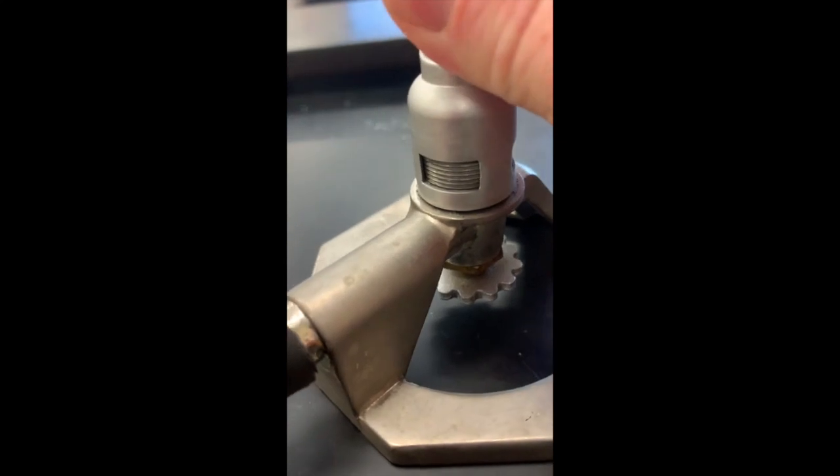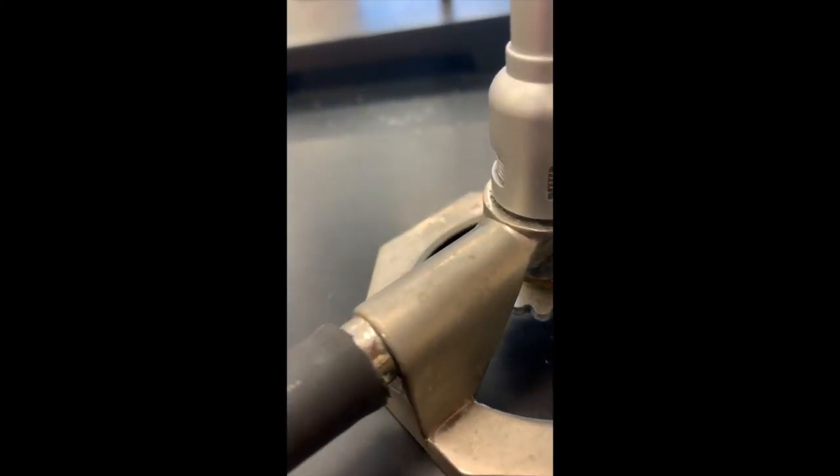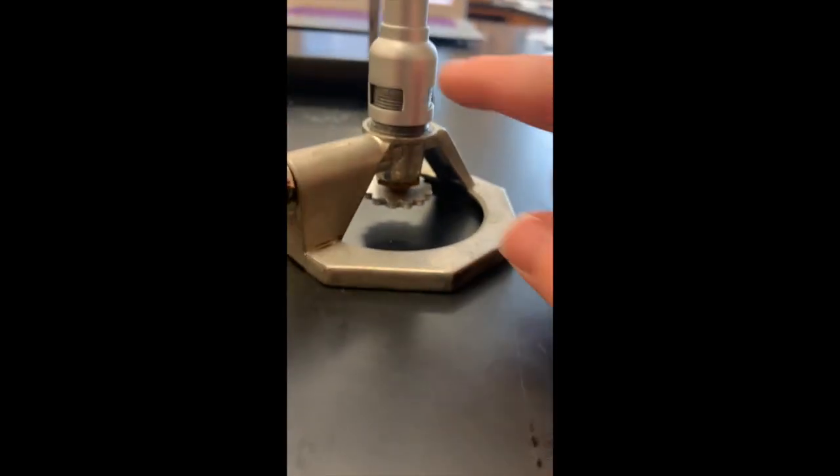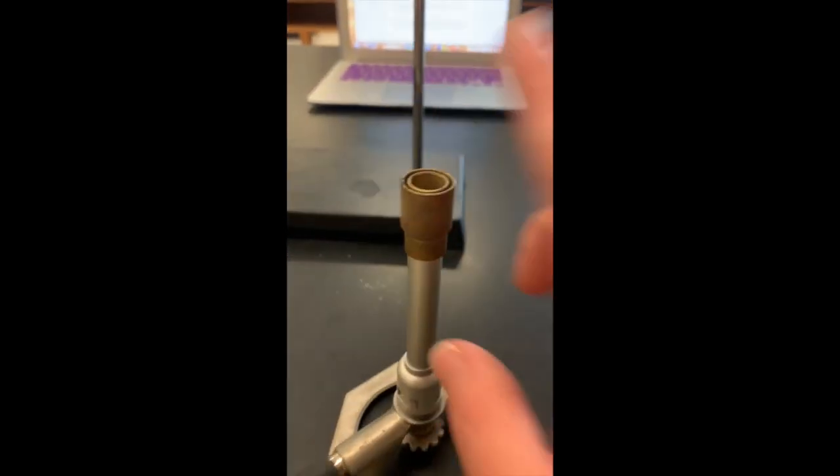Now we're going to take the top of this Bunsen burner and twist it four times to get a little bit more oxygen flow, which means the flame should be blue.